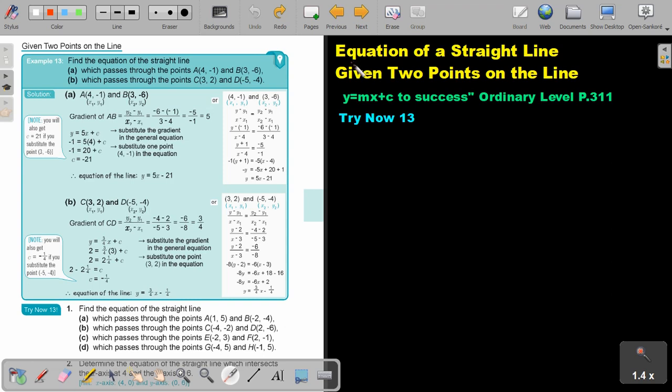In this video, we are going to continue with the equation of a straight line. In this case, they will give you two points on the line. You will find this on page 311 in the Namibia Ordinary Level Mathematics textbook, y equals mx plus c to 6c. Let's look at example 13, and I'm going to make it a bit bigger.